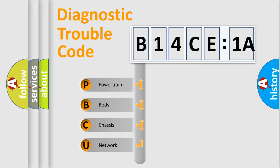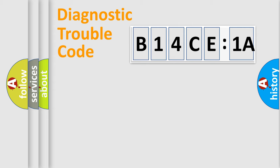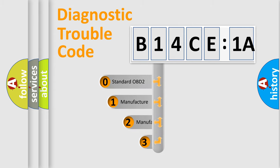We divide the electric system of automobile into four basic units: Powertrain, Body, Chassis, Network. This distribution is defined in the first character code.